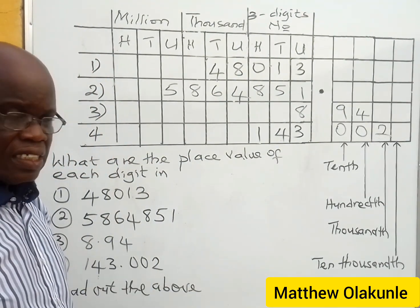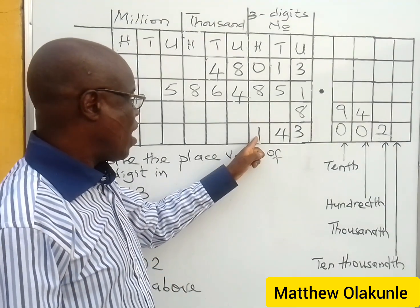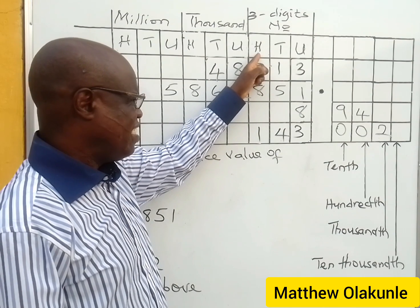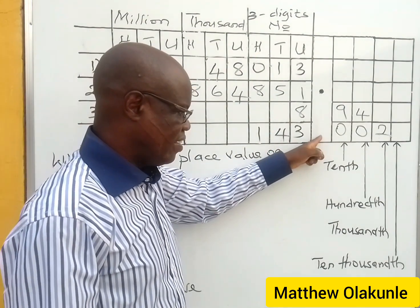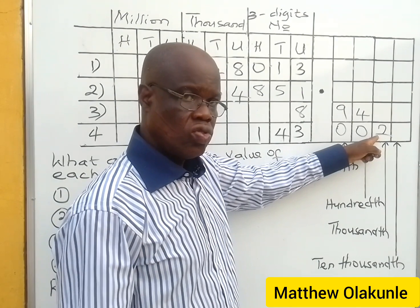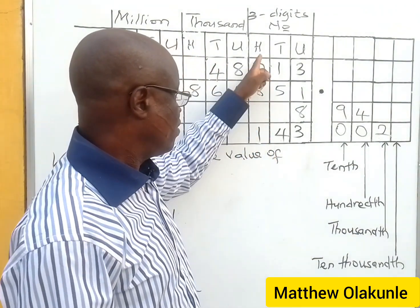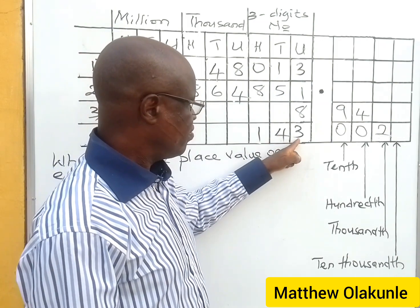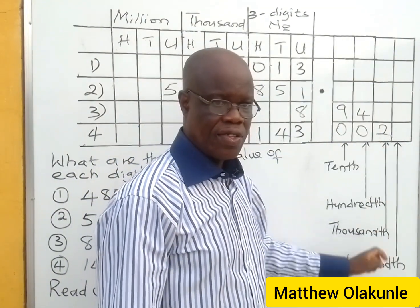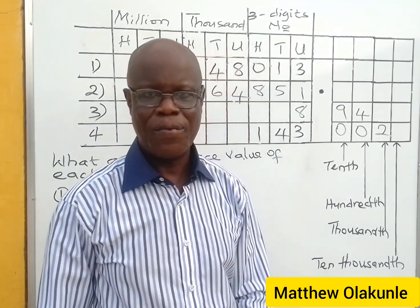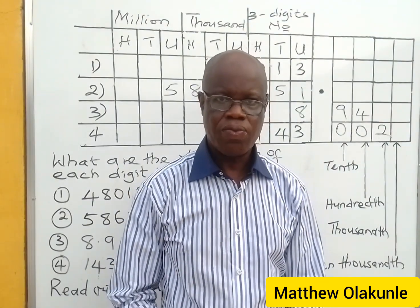How do you read it? Very simple: one hundred and forty-three and two-thousandths. That's it. We are going to stop here — please don't forget to subscribe to this channel.